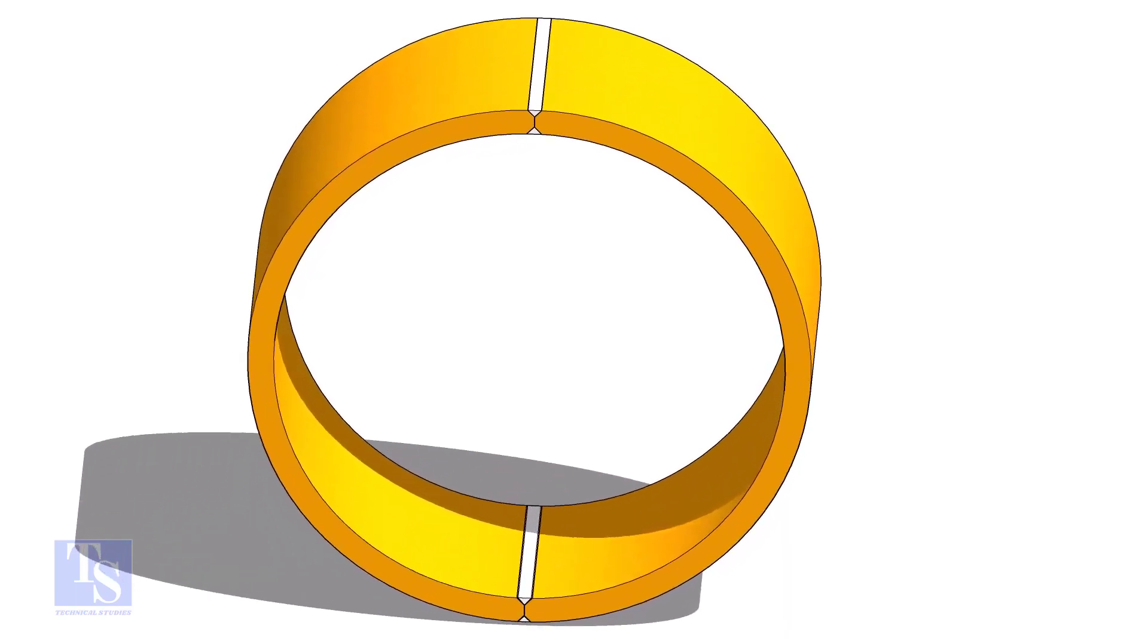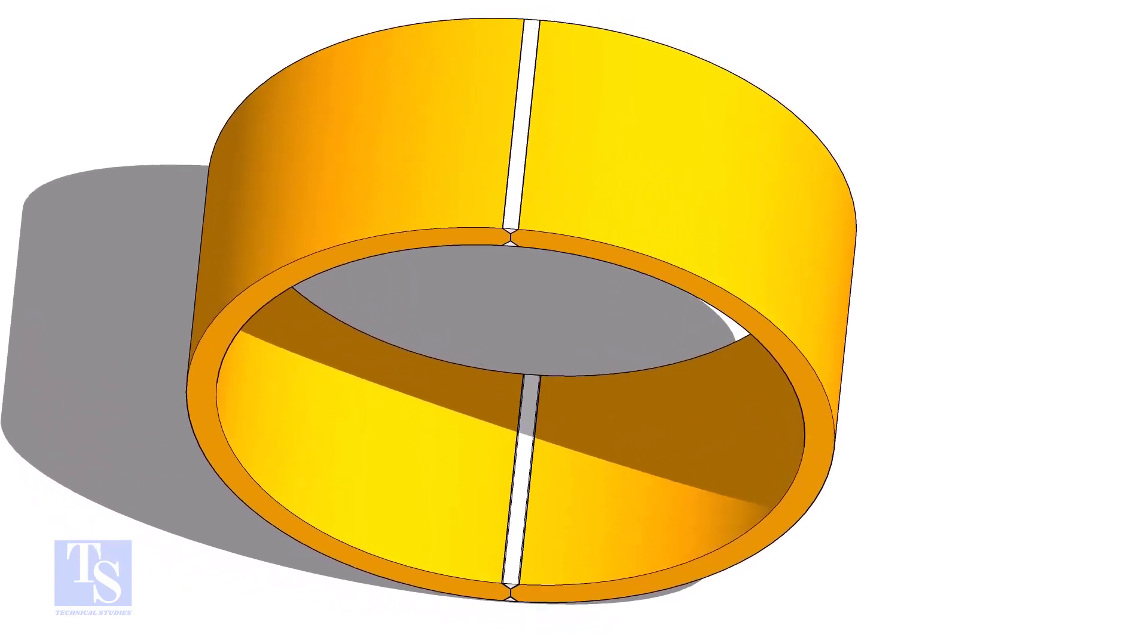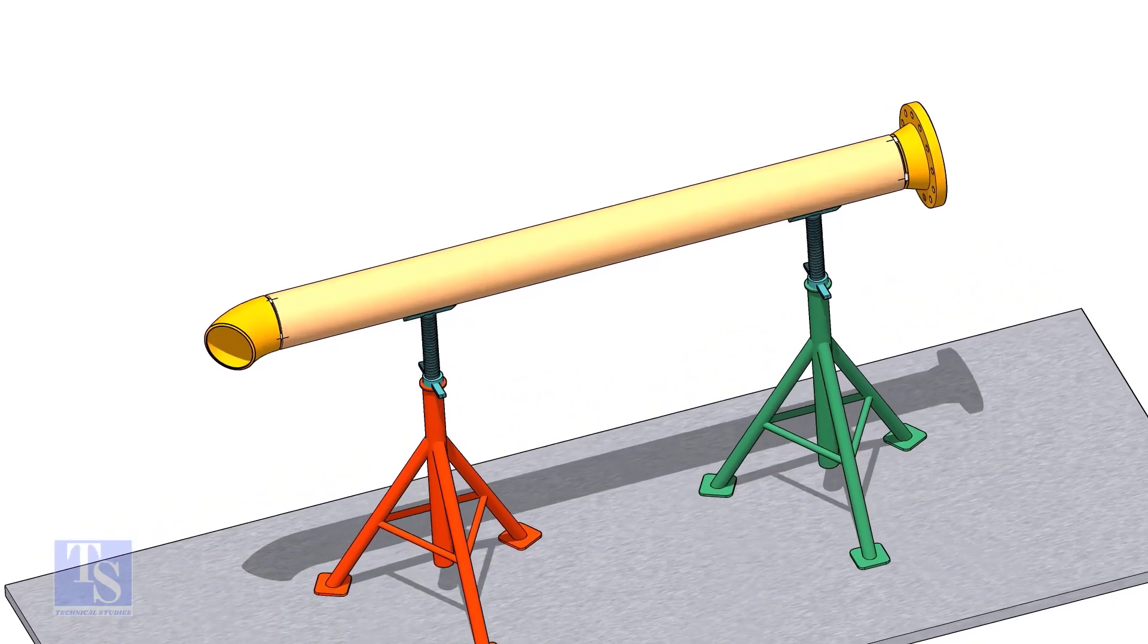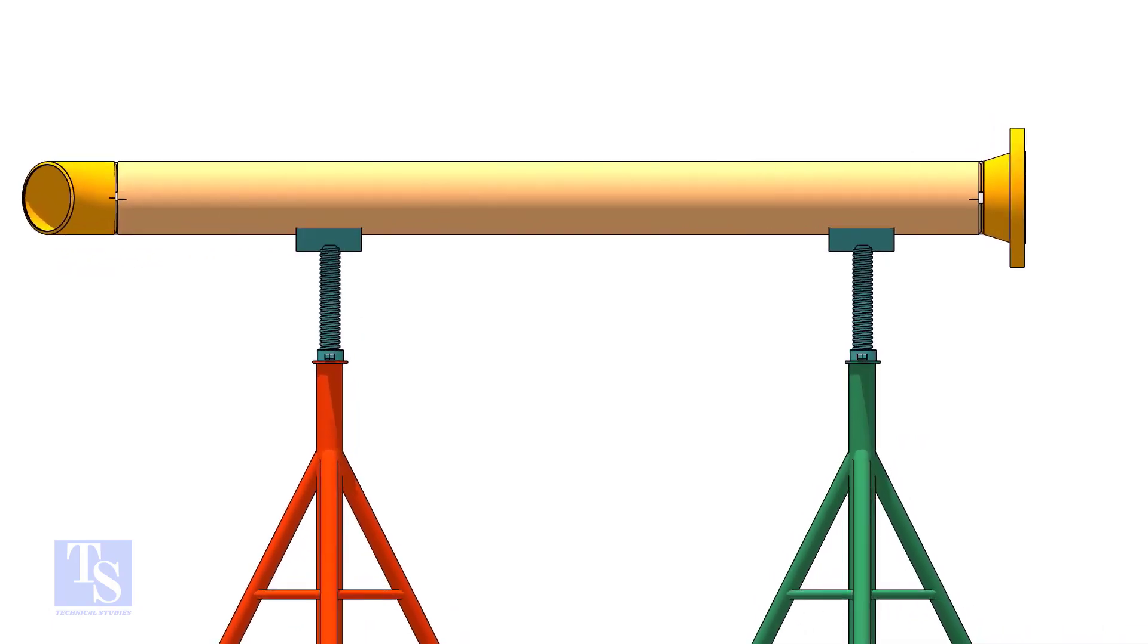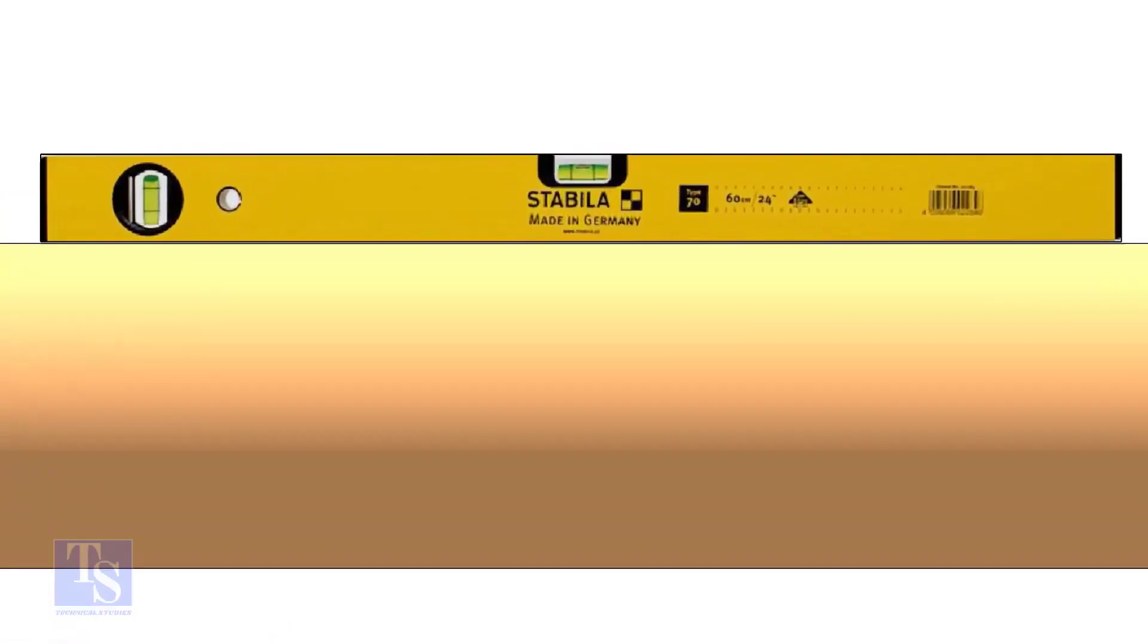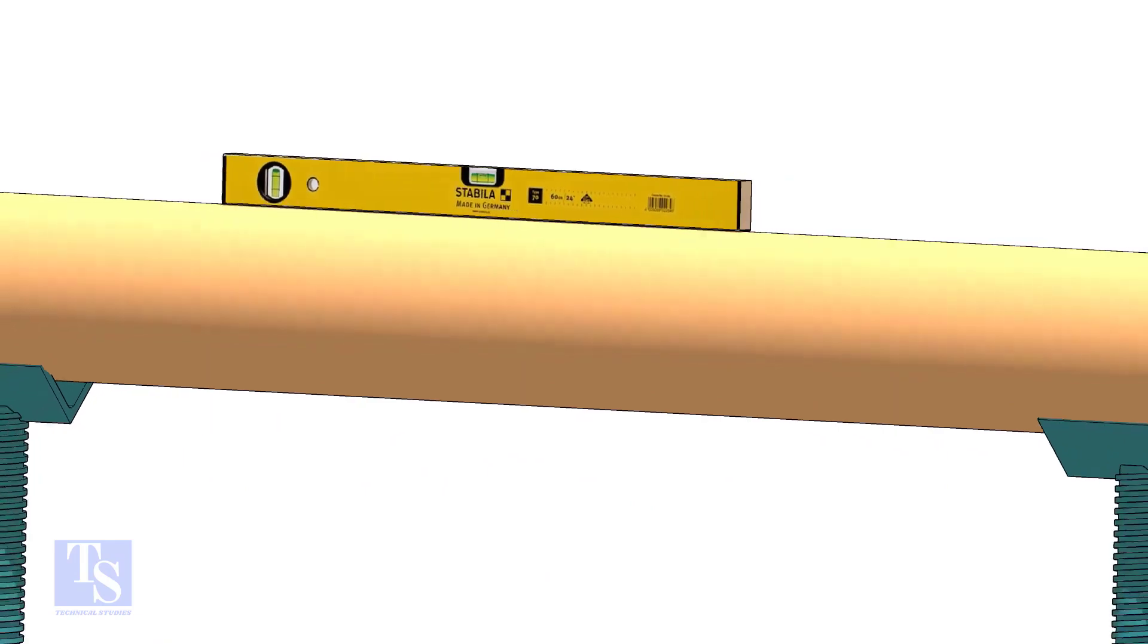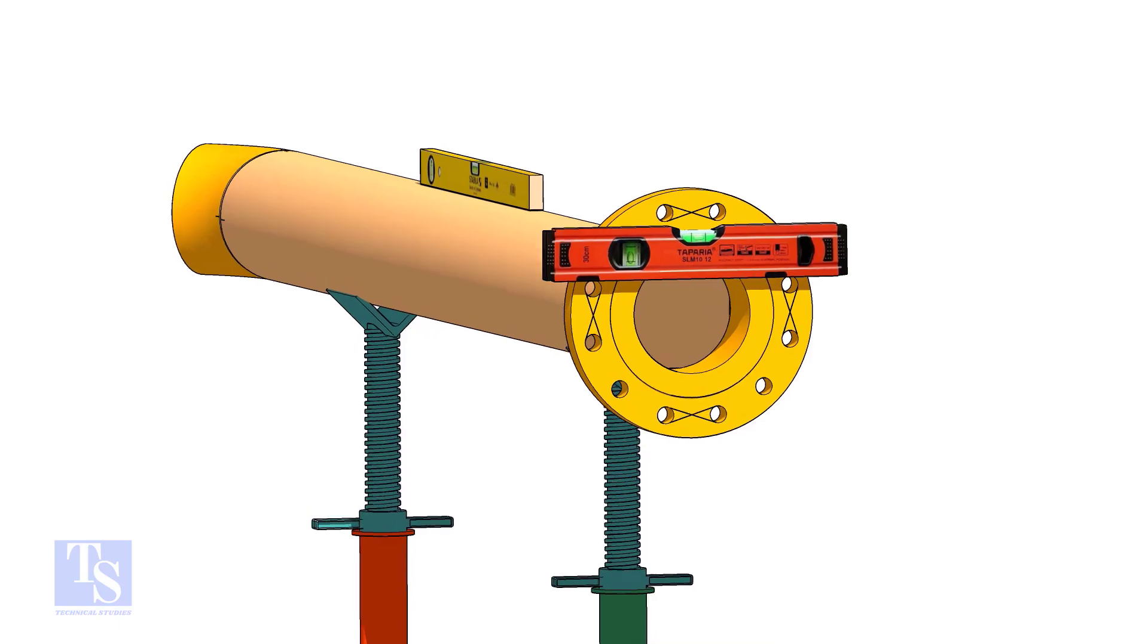After welding, drill the holes and tack weld the bolts as shown. Let us fit up the flange now. Correct the level of the pipe. Correct the level of the flange that is already installed.